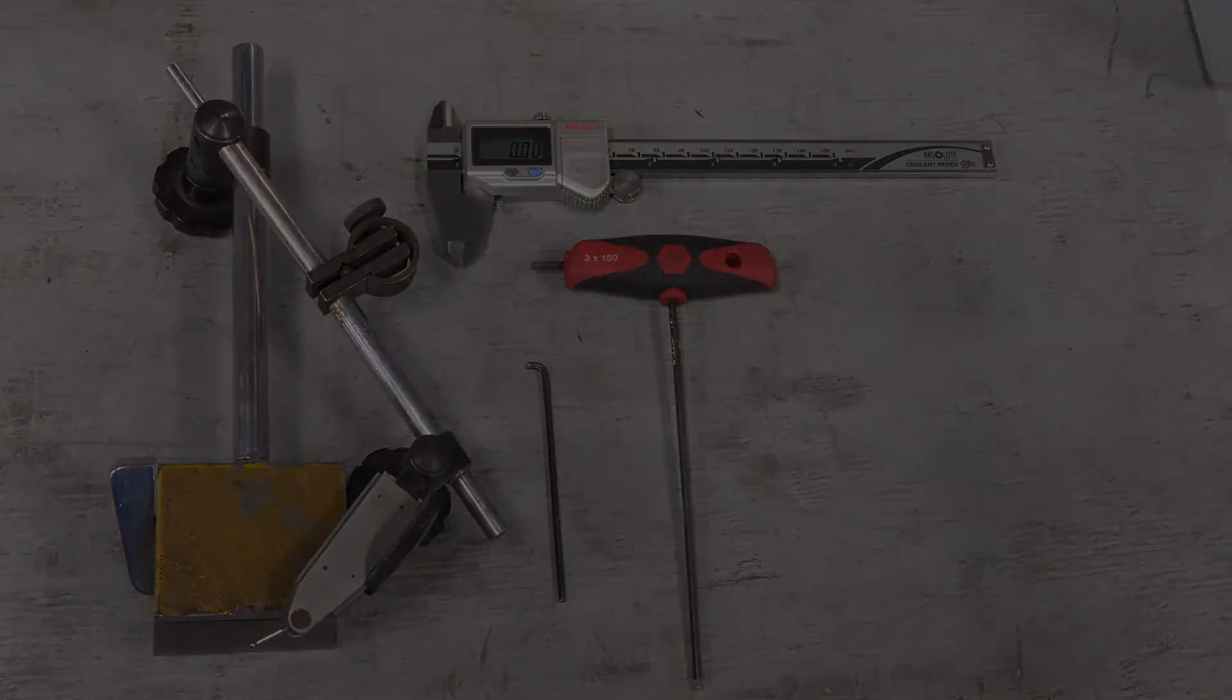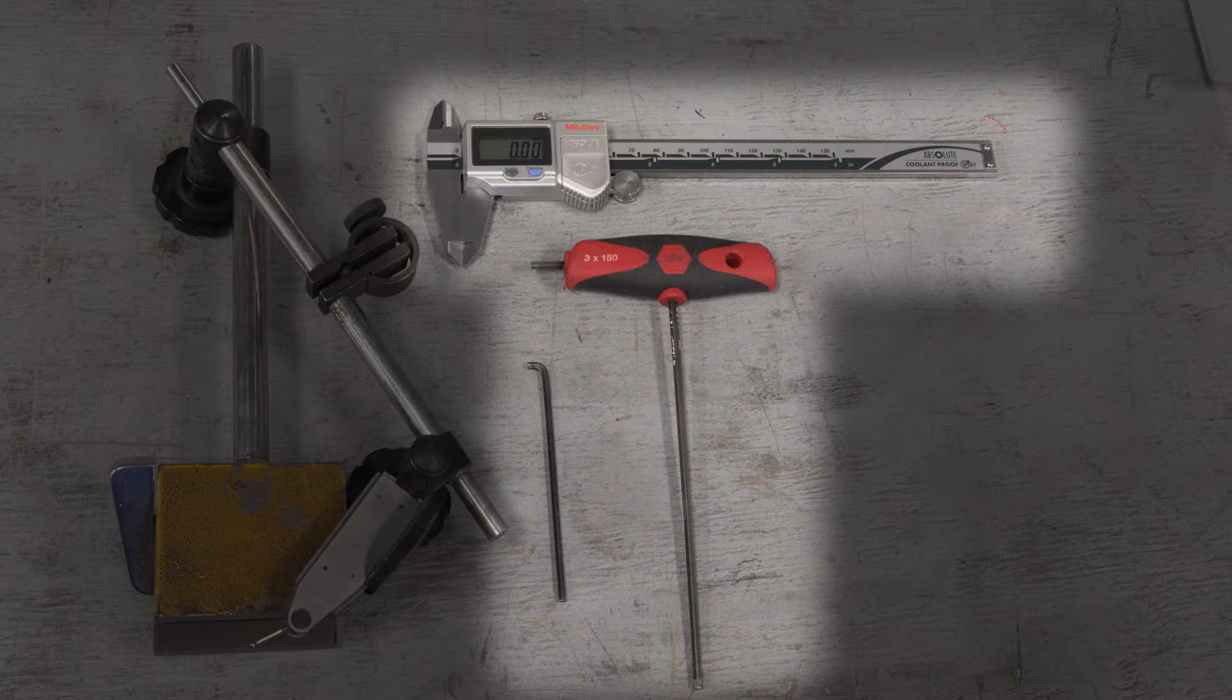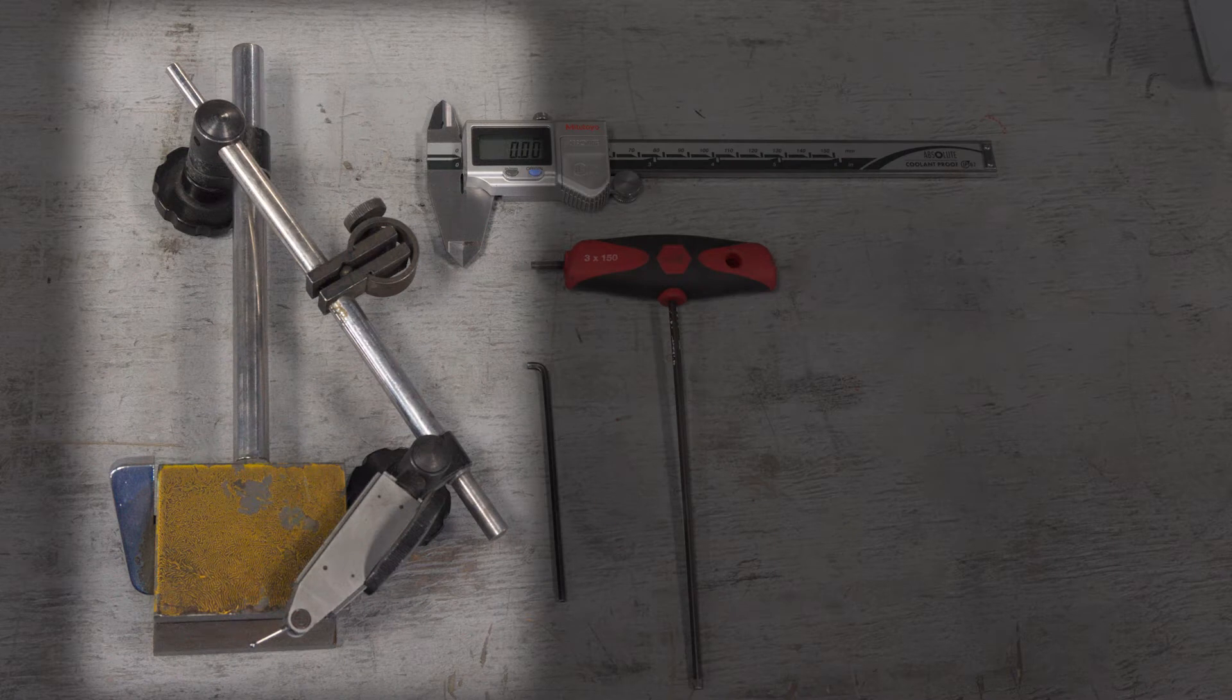The tools that you will need is a shortened 2.5mm hex wrench, 3mm hex wrench, and calipers, or some way to accurately measure the bell mouth's size. An indicator on a magnetic base makes it easier to make fine adjustments, but is not necessarily required.